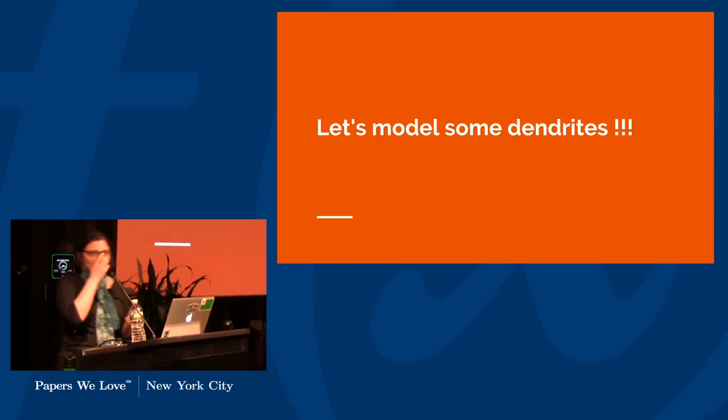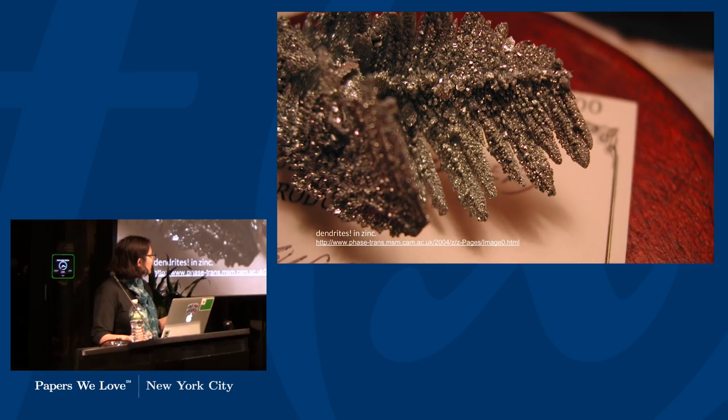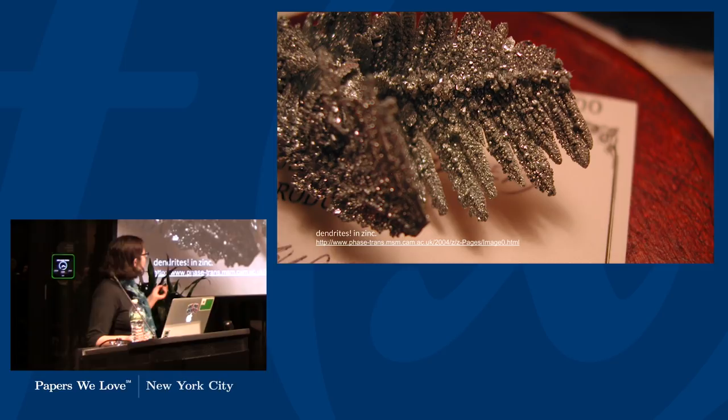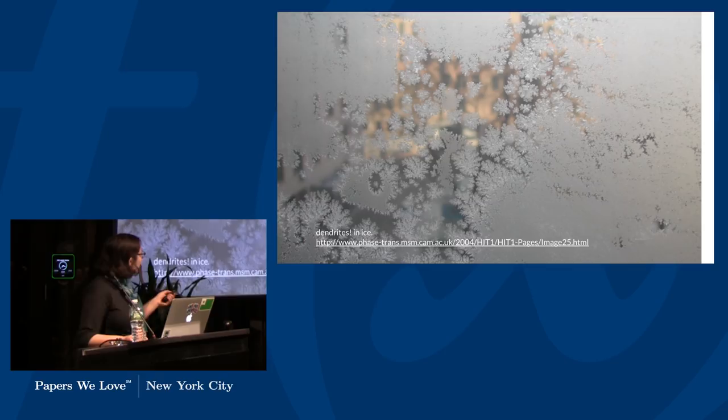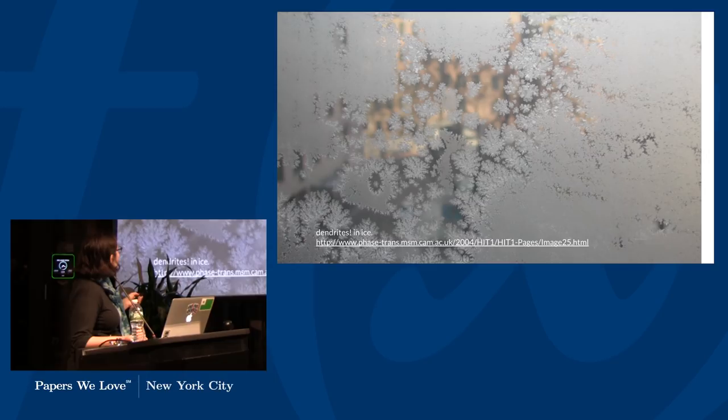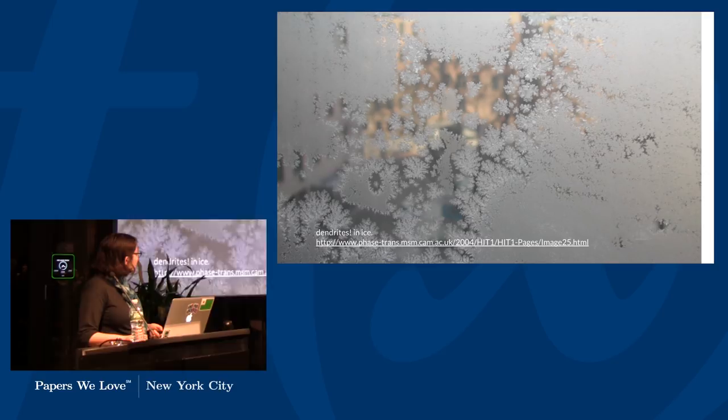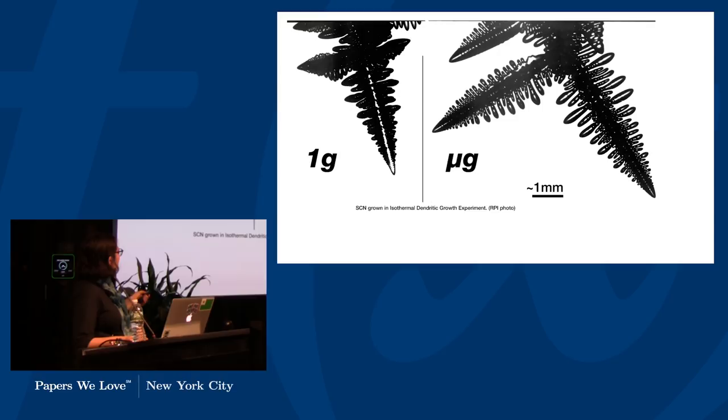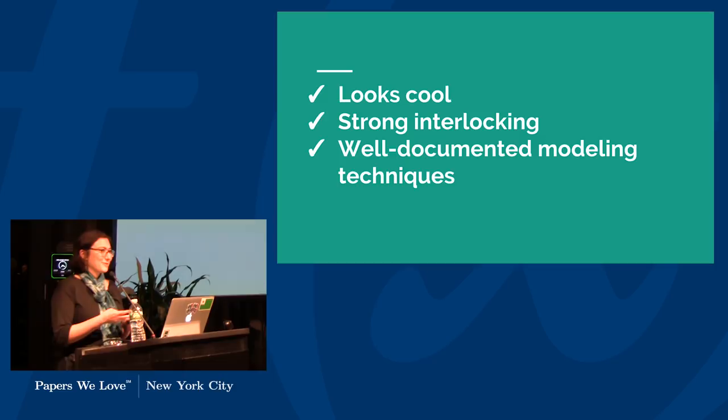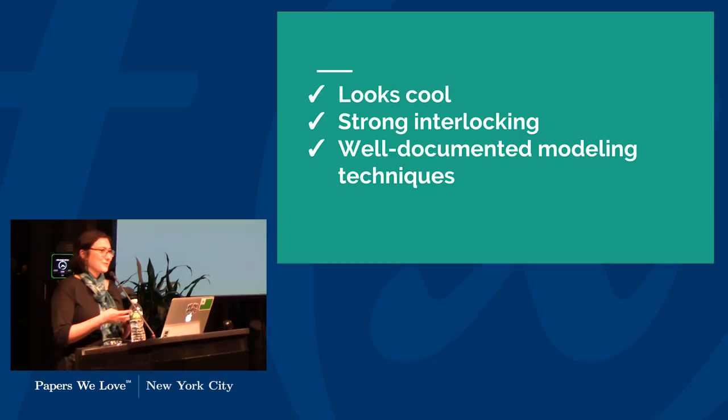The paper begins by talking about dendrites as a source of inspiration. Dendritic solidification being the growth of crystals in a supercooled environment. So some examples, we've got dendrites in zinc, and then we've got dendrites in ice, so the formation of ice crystals. There's this really nice branching structure going on. The authors talk about how they really like the shape of these and how it seems like it could be a good candidate to use for jigsaw generation.